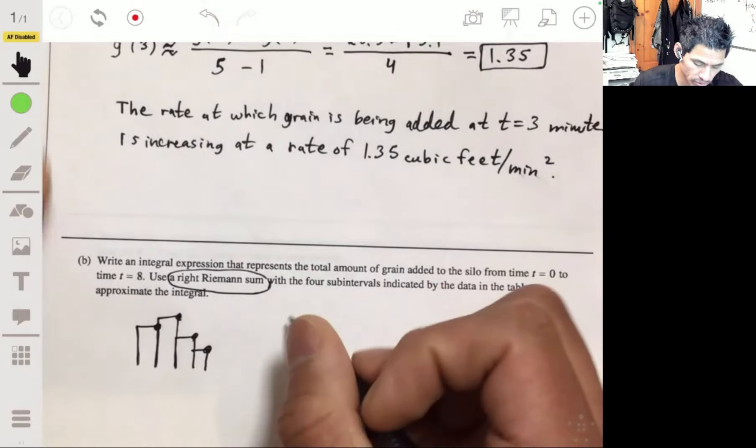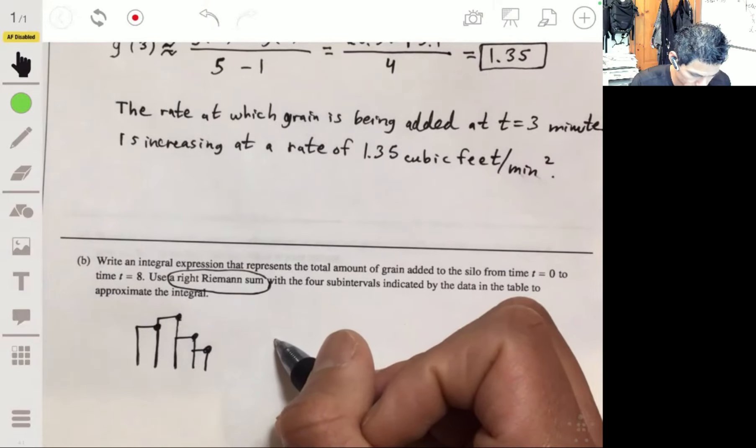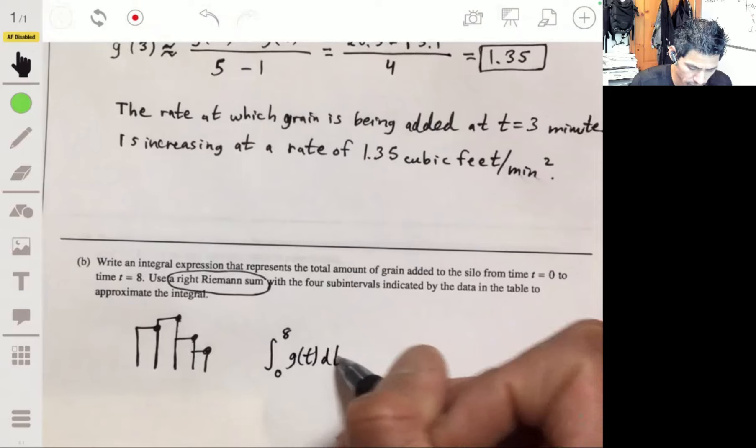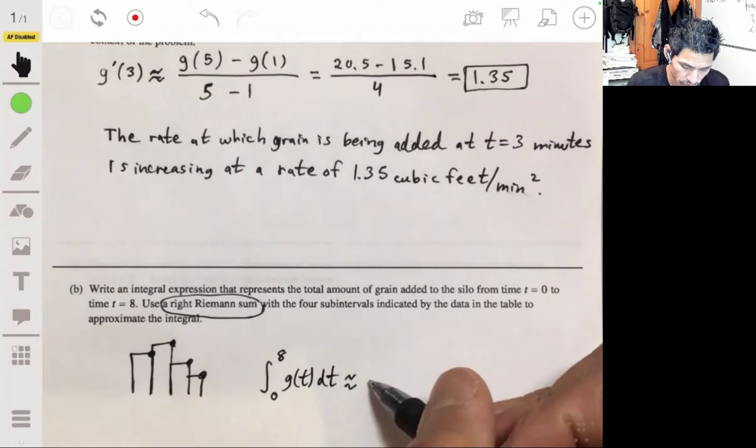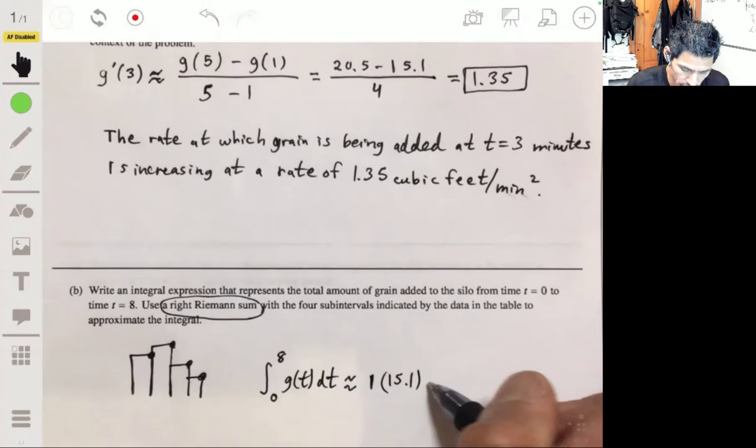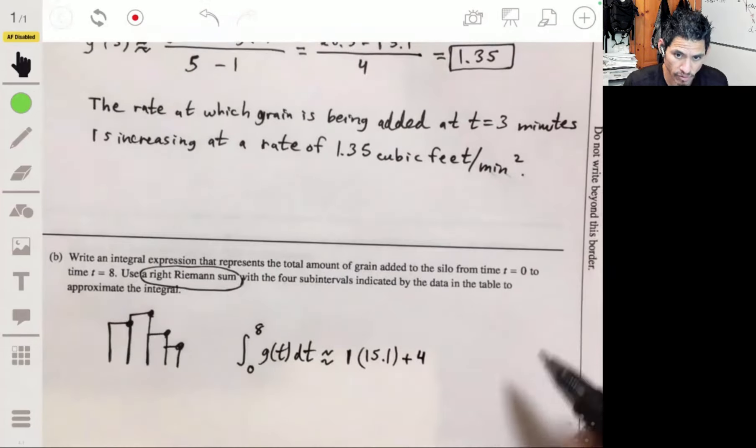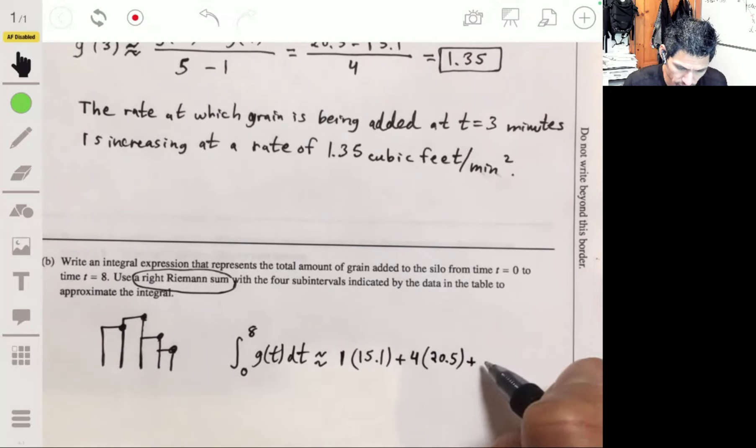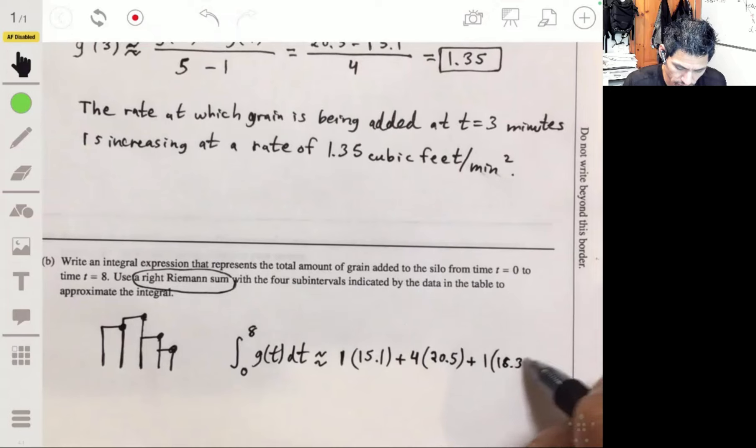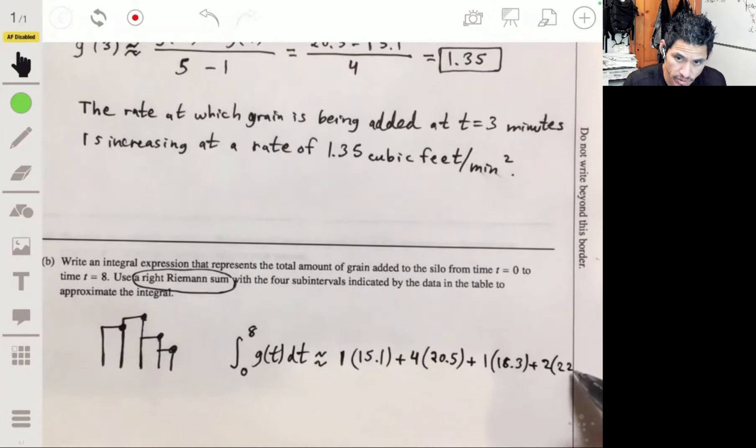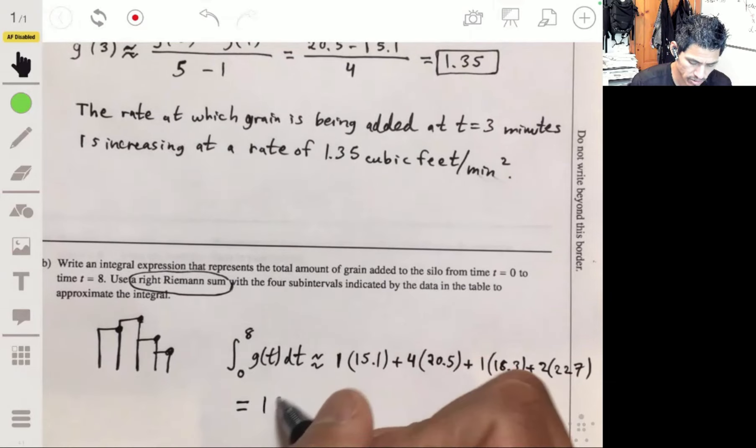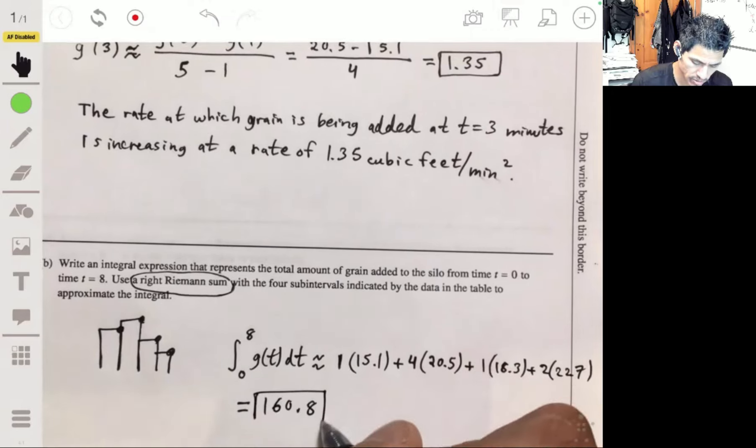So essentially, we just set up an integral like this. From zero to eight. And we were going to say this is approximately equal to one times 15.1, plus four times 20.5, plus one times 18.3, plus two times 22.7. Again, using your calculator to do this, you'll get 160.8.